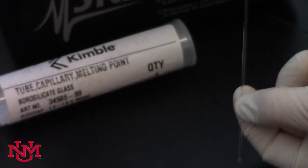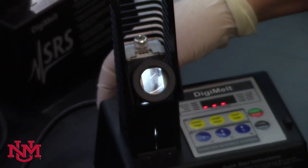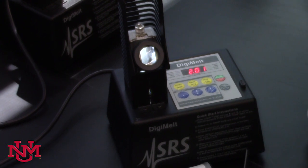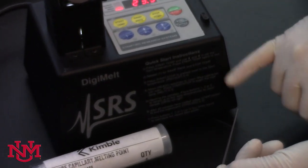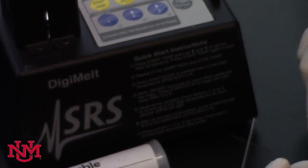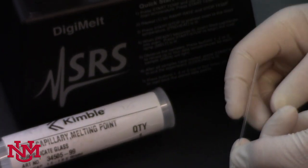You can turn on the digi-melt on the back side, and you'll hear some noises, and it should boot up. The instructions for using the digi-melt are printed right on the front, and we also have information sheets in the same area of the lab.